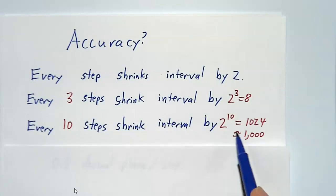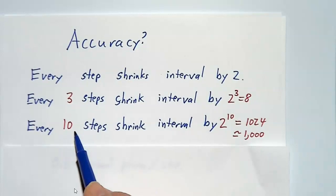Every 10 steps, we cut it by a factor of 1,024, or about 1,000. So that means that every 10 steps, we get 3 more decimal places of accuracy.